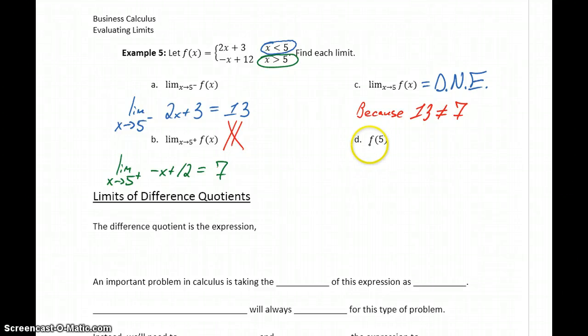The other question we're asked doesn't have anything to do with limits; it just wants us to evaluate the function at a value of 5. In this case we would say that's undefined because each of these are strict inequalities, so our function's only defined when X is less than 5 or greater than 5. At 5 itself it's undefined unless we made one of these a greater than or equal to or a less than or equal to, but since that's not there our function is simply undefined at X equals 5.